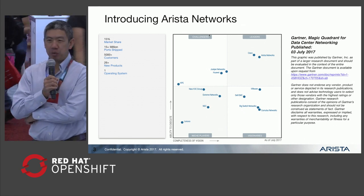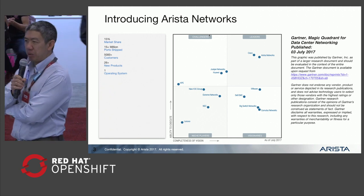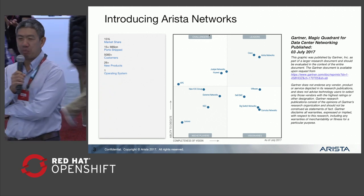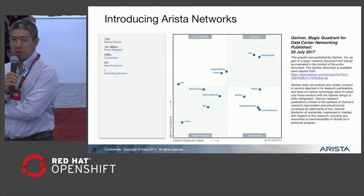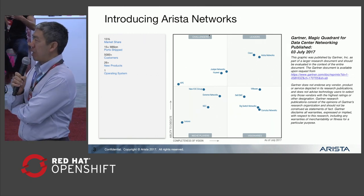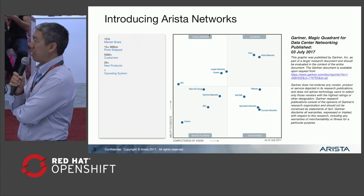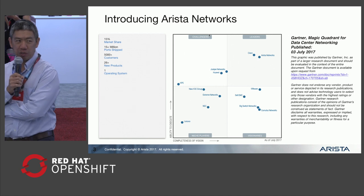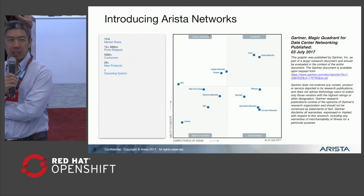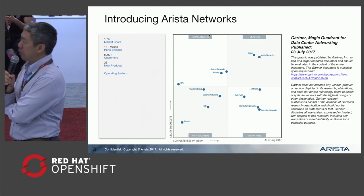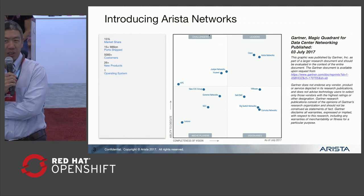For those of you who are unfamiliar with Arista, we're a data center networking company with 15% market share. We're the number two data center networking equipment maker right after Cisco. We have over 15 million ports shipped, and over 26 new products introduced over the last year. If you look at the Gartner Magic Quadrant, you can see that Gartner has ranked Arista pretty favorably — we're up there on the top right, so we're both a leader and a visionary.